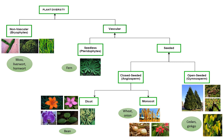Pterophytes are the seedless vascular plants. They grow in damp shady places, have well-developed leaf systems, stem, and roots, but no flowering. The seed plants in turn are divided into angiosperms and gymnosperms.